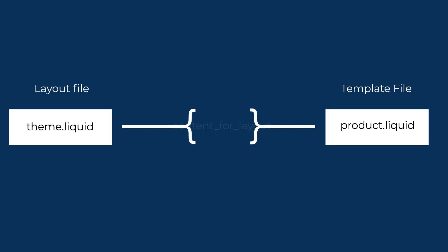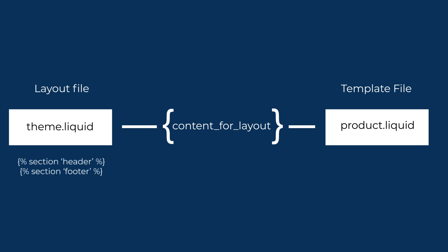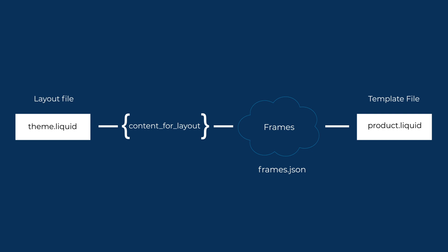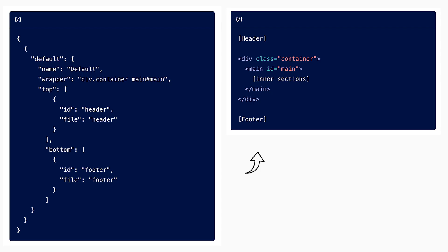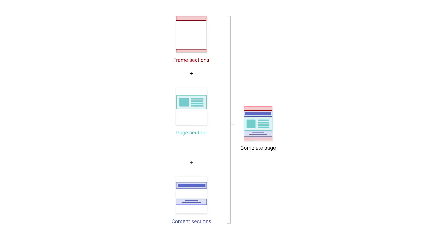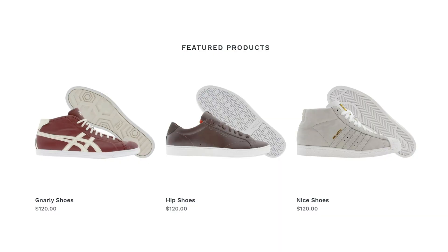So instead of the current setup where the template file is rendered inside the content_for_layout tag and the header and footer are on the layout file, the code for including the header and footer moves to frames.json, which wraps those sections around whatever template is being loaded inside content_for_layout. As shown in the official documentation, the header and footer are inserted either side of the usual content within content_for_layout. Under this new sections architecture, sections are now either a frame, a page section, or a content section, and the combination of these becomes your completed page. The code inside each individual section file has stayed virtually the same as before, with the exception of content sections, which come with a new content schema that separates the content of a section from other presentational settings.